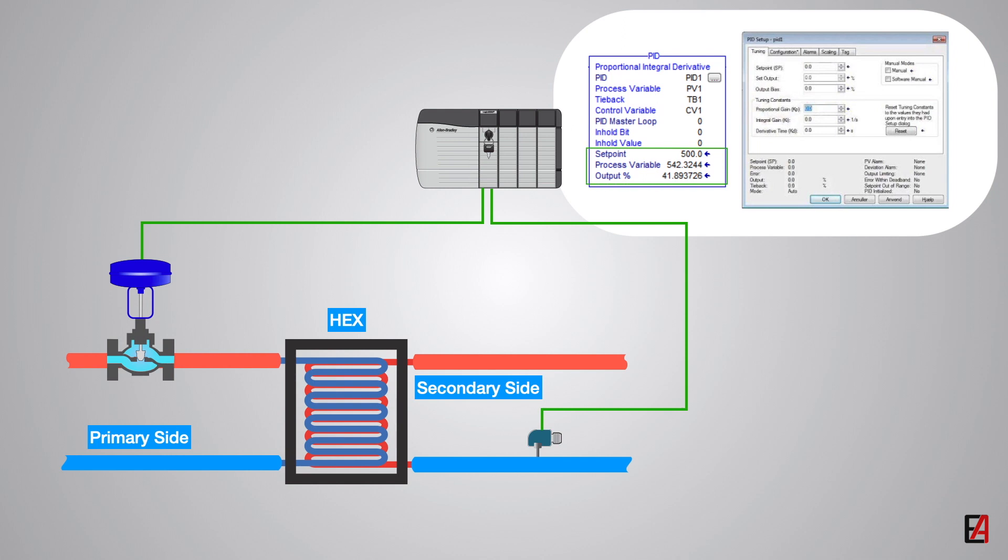The process of arranging these three parameters to their optimum values in order to obtain desired control response is referred to control loop tuning or PID tuning, which we will be seeing in detail in our next video.